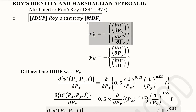The formula involves two derivatives being divided: the derivative of the indirect utility function with respect to the price of the first good Px, divided by the derivative of the indirect utility function with respect to the budget I, with a negative sign applied. The final answer equals the Marshallian demand function. Similarly, for good y, the only change is that Py replaces Px in the numerator; all other terms remain the same.